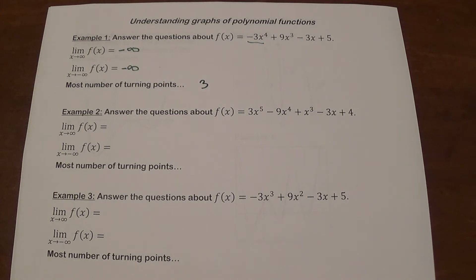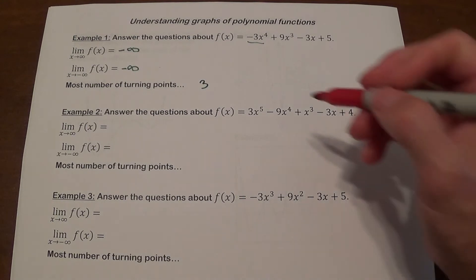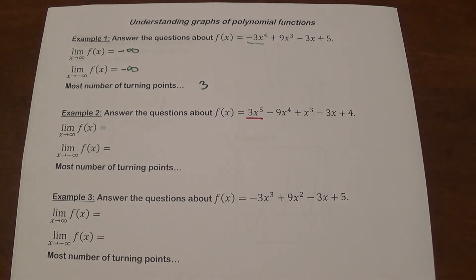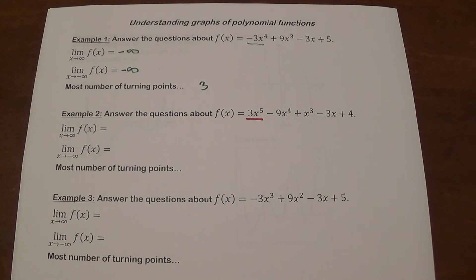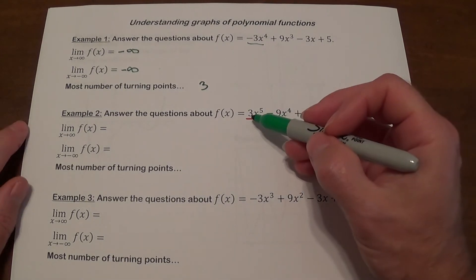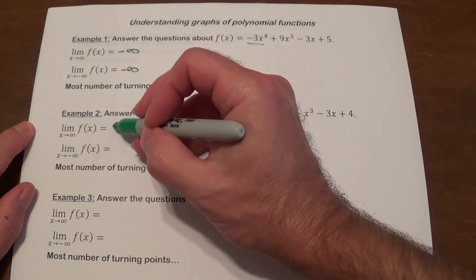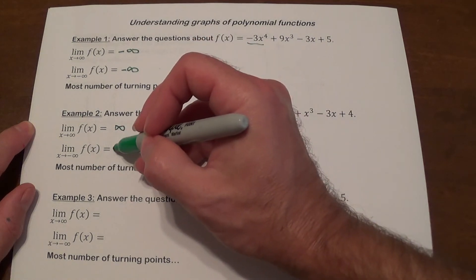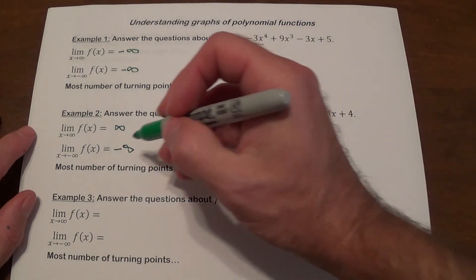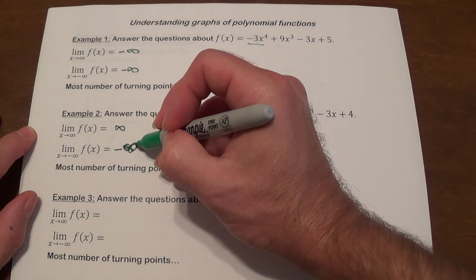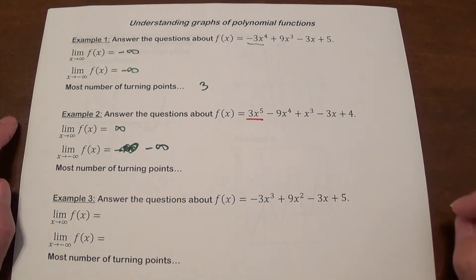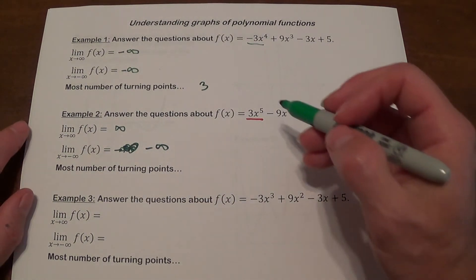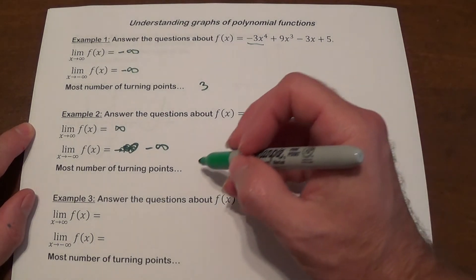Our next example: we have a function of 5th degree. This is our highest exponent. When you do these problems, be very careful — sometimes terms may not be written in standard form, so make sure you correctly identify the variable with the highest exponent. We have a positive leading coefficient of 3, which means the right end is going to go up. This is an odd degree, which means the left end is going to do the opposite and go to negative infinity. The maximum number of turning points: degree 5 means 1 less, so it's going to be 4.